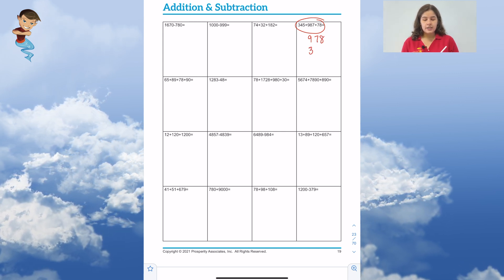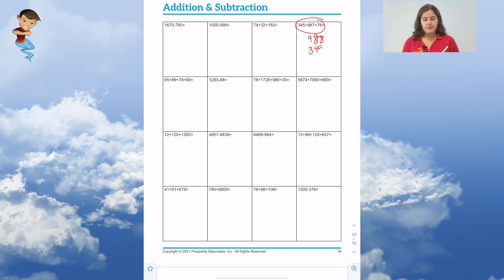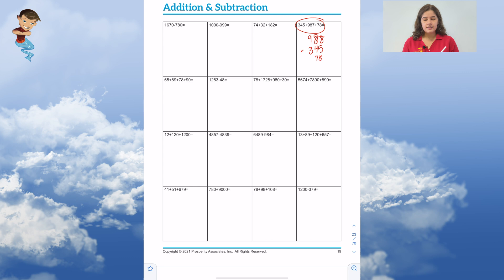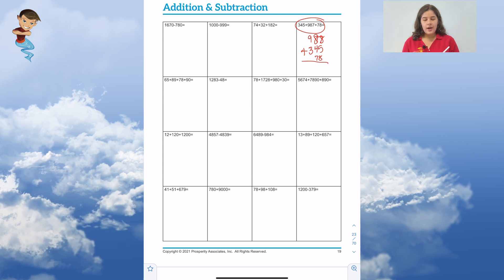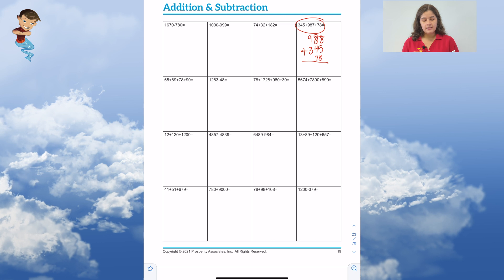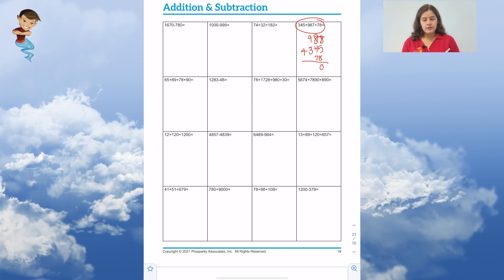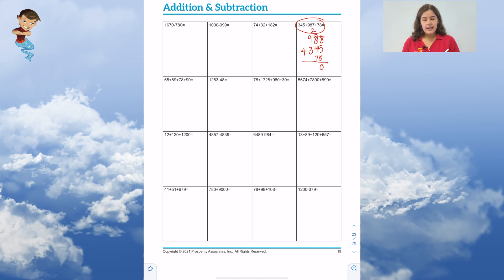So here we have 987 plus 345 plus 78. We have to add our 7, 5, and 8, which gives us 20. That means our 0 goes below our numbers, and we're going to carry our 2.